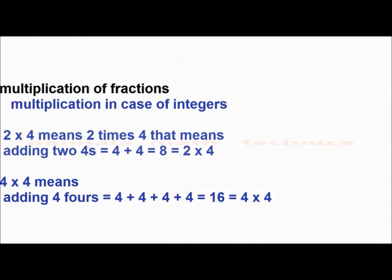Multiplication in case of integers. 2 into 4 means 2 times 4, that means adding 2 fours: 4 plus 4, that is equal to 8. So, 2 into 4 is equal to 8. And 4 into 4 means adding 4 fours: 4 plus 4 plus 4 plus 4 equals 16. So, 4 into 4 equals 16.